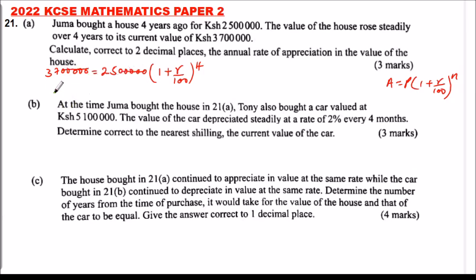Then we take the fourth root, since that is the fourth power. We can also write it as 37 divided by 25, raised to the power of 1 over 4 — either the fourth root or power 1/4 — and that is equal to 1 plus r divided by 100.